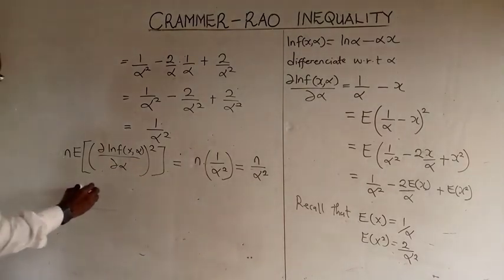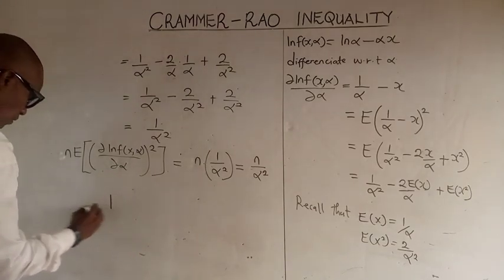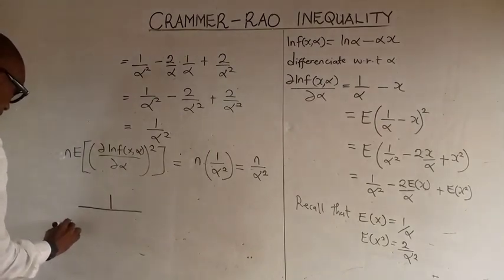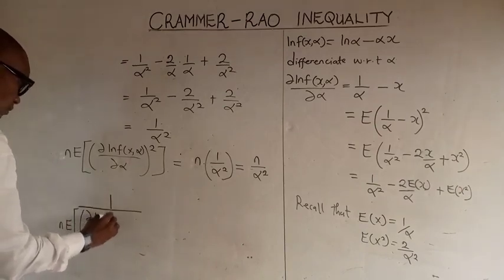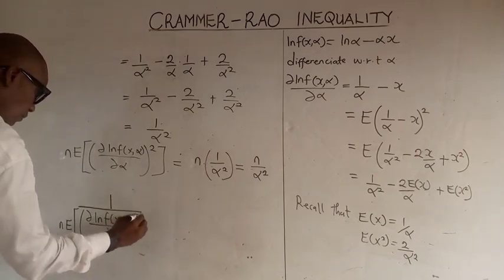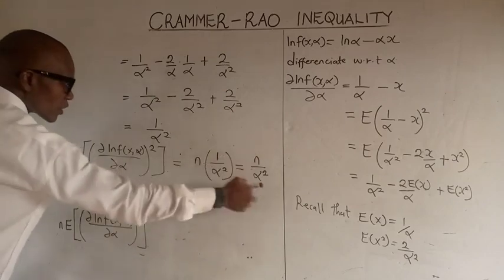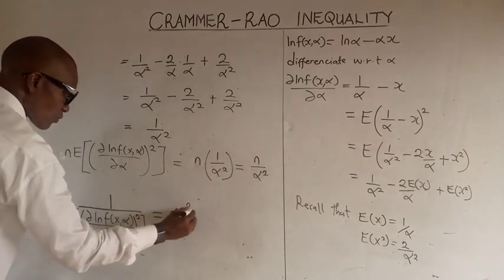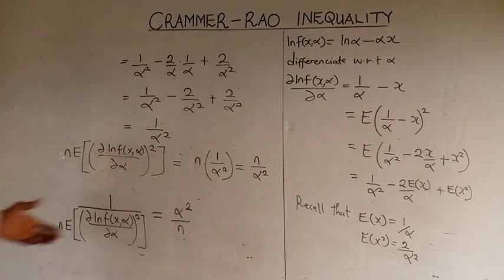So finally, since the variance is equal to 1 over n times expected value of this, since this is 1 over here it changes, so we have alpha squared over n. So for the exponential distribution, this is the value we get when we use the Cramér-Rao inequality to solve for the lower bound.